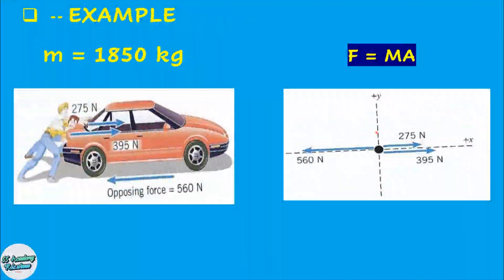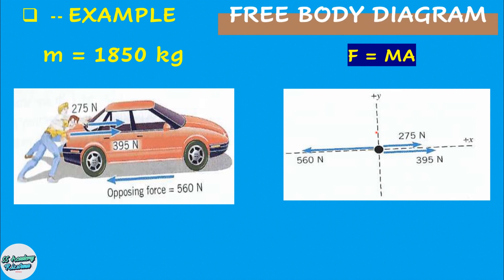When using the second law to calculate the acceleration, it is necessary to determine the net force that acts on the object. In this determination a free body diagram helps enormously. A free body diagram is a diagram that represents the object and the forces that act on it. Only the forces that act on the object appear in a free body diagram. Forces that the object exerts on the environment are not included.